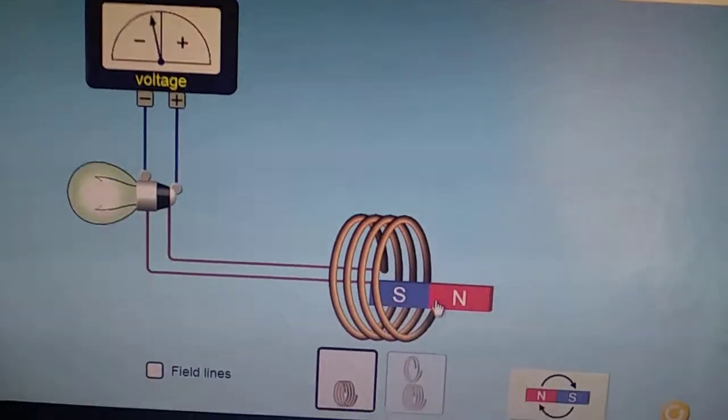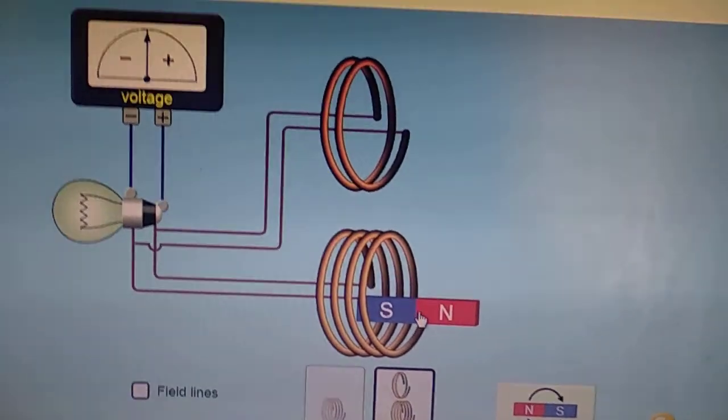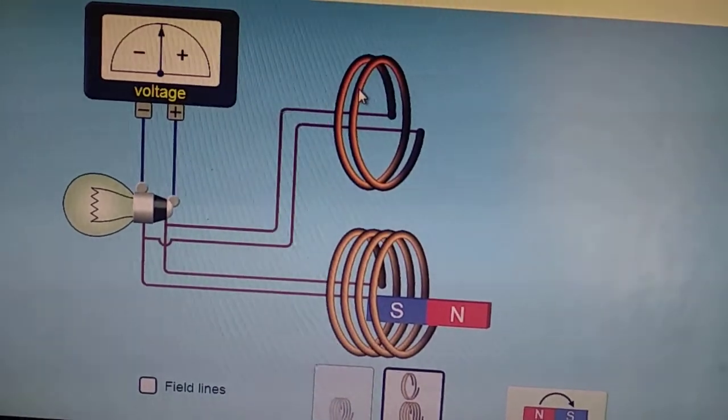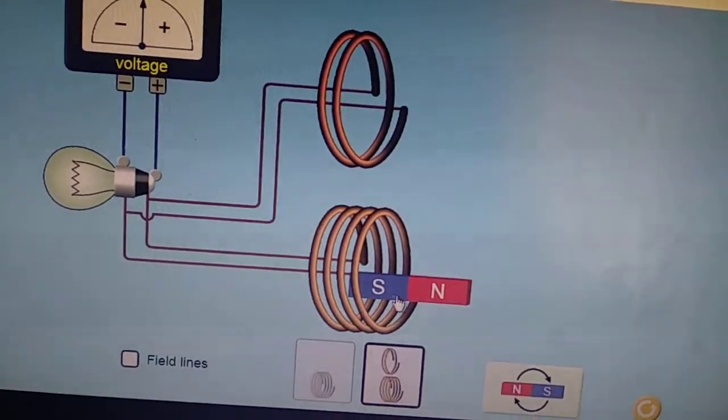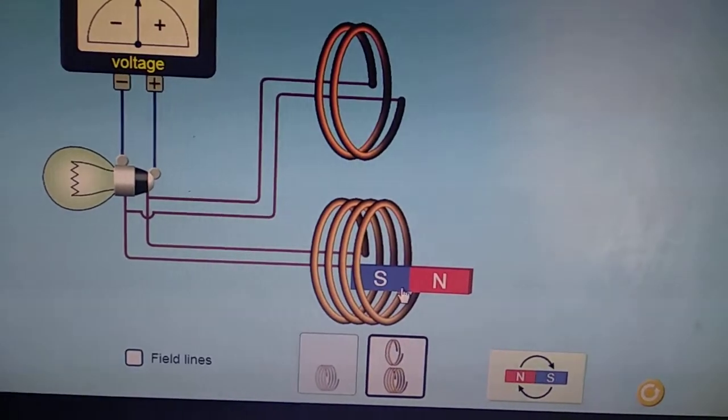Okay, now suppose we have two coils. Lesser number of turns means less magnetic flux, more number of turns means more magnetic flux.